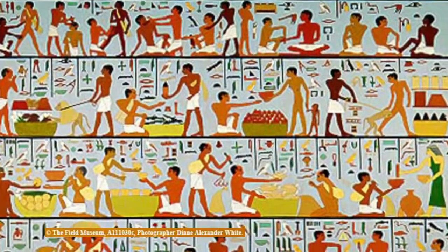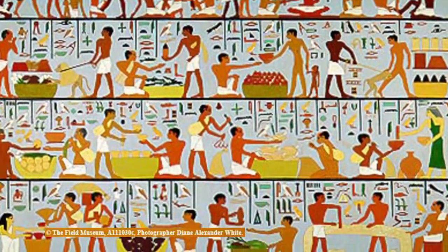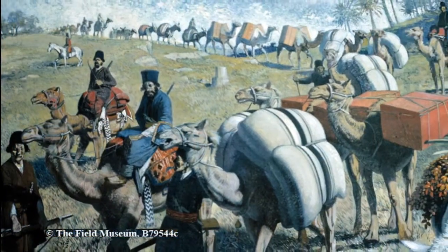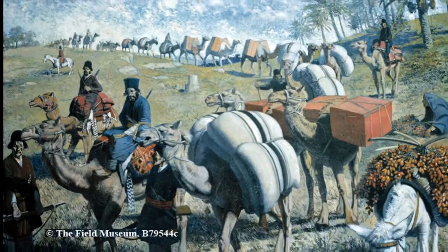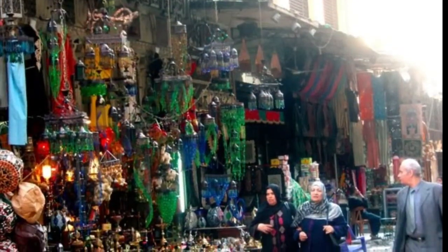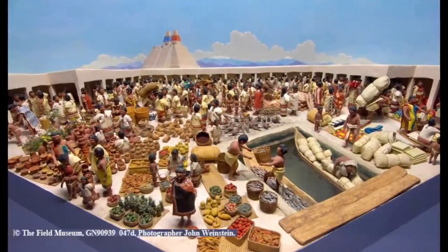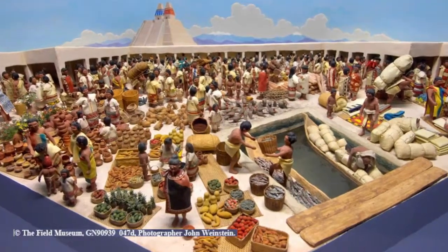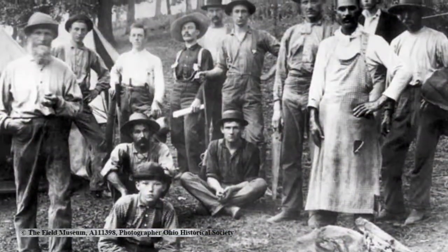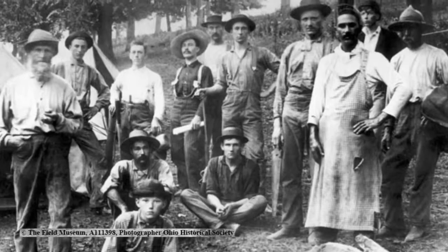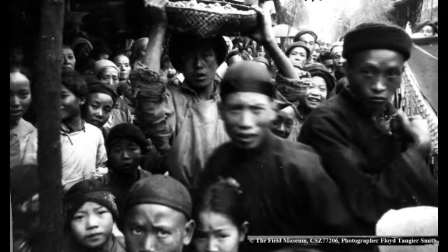It's really important to understand trade and exchange networks and their variability in time and space, because being part of social and economic networks is a fundamental characteristic of humans over tens and hundreds of thousands of years. Humans have always been part of networks that extend over multiple geographic scales — from communities to regions to even larger networks — and it's critical to understand how these networks have changed over time and how they vary from one cultural system to another.